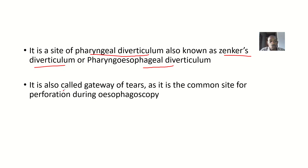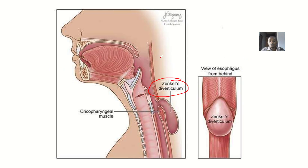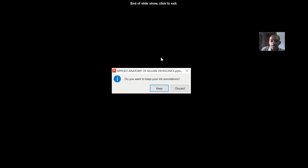It is also called the 'gateway of tears,' as it is a common site of perforation during esophagoscopy — that's when you insert a scope to observe the inside of the esophagus. You can actually perforate this area, causing protrusion of structures inside and thereby forming a diverticulum. That's the applied anatomy of Killian's dehiscence.